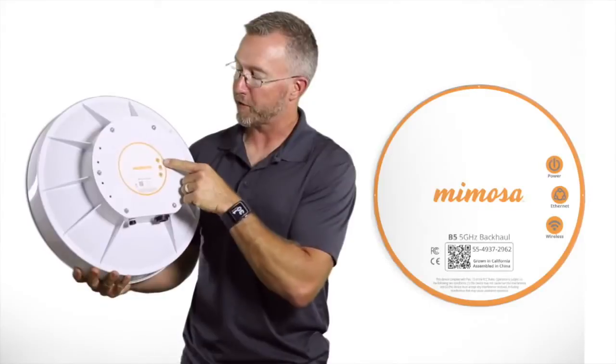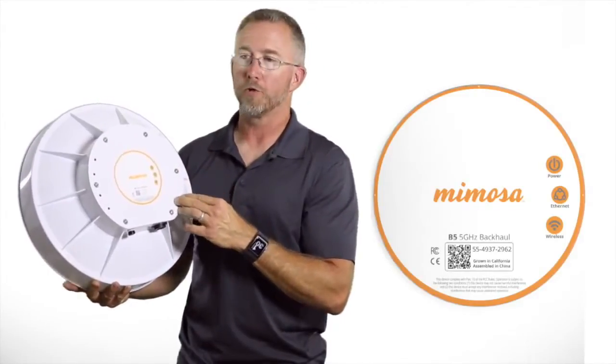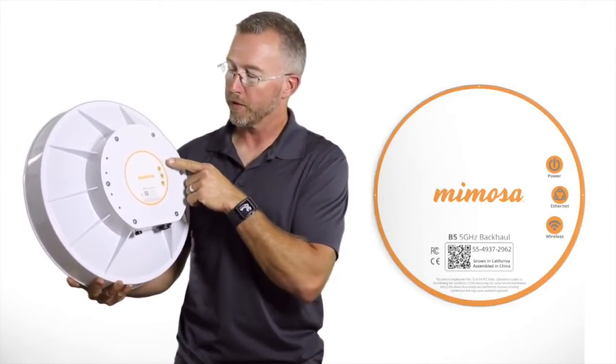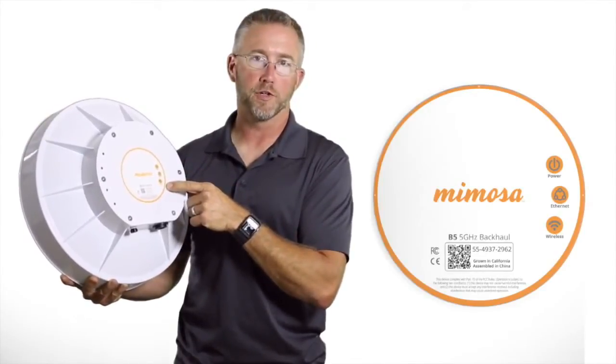The status lights, which are not on of course right now, are very clear. They're very bright and visible from a great distance, so you don't have to worry about crawling up the tower or to a rooftop to see the status lights from a distance. You've got power, network activity, and wireless activity as your indicators.